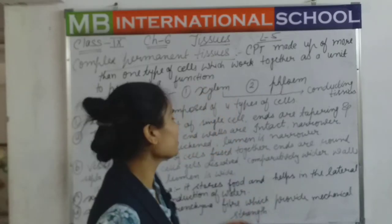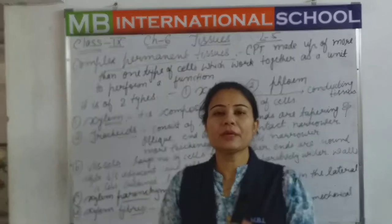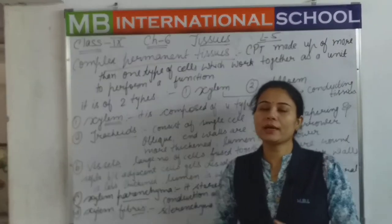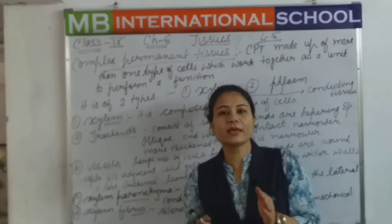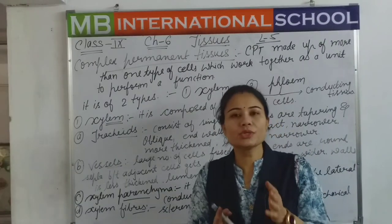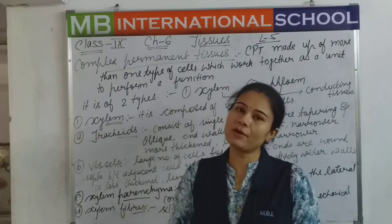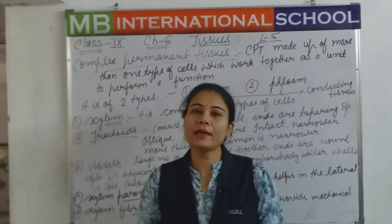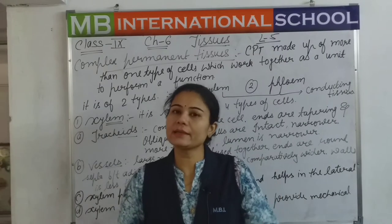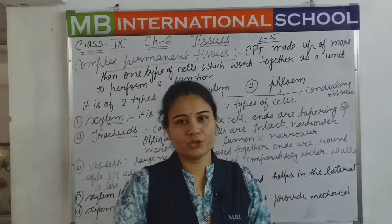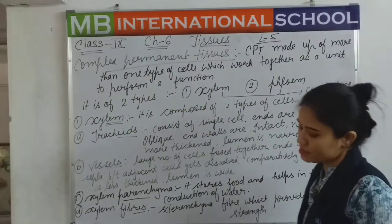Today we are talking about the next topic, that is complex permanent tissues. Permanent tissues are those which have already lost their power to divide — their capacity for division is gone — so they get converted into permanent tissues.